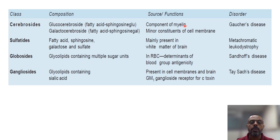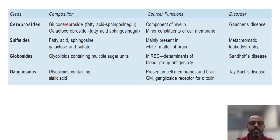Cerebroside is also a component of the myelin sheath of the nerve and it is a minor constituent of the cell membrane. The disorder associated with cerebroside is Gaucher's disease, which is an inborn error of metabolism occurring due to the deficiency of the glucocerebrosidase enzyme, which is required for the degradation of glucocerebroside.